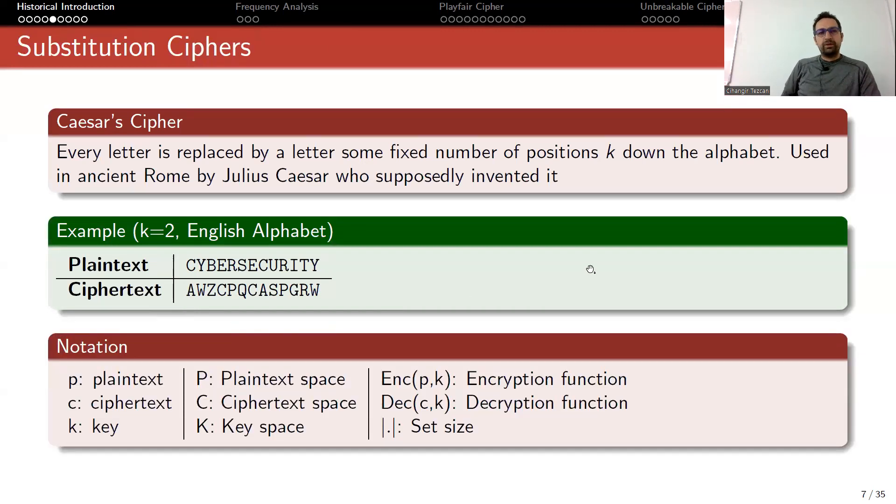To see why these algorithms are easy to break, let's give some notation. We represent plaintext by P, ciphertext by C, and so on. We're interested in key space - how many different keys can we choose. If you're using English alphabet, you have 26 letters, so k can be from 1 to 26, but if you choose 26 it goes back to itself, so actually you have 25 options.